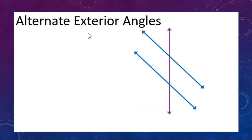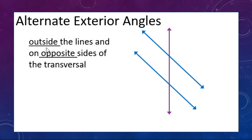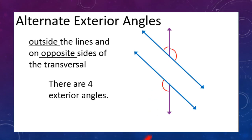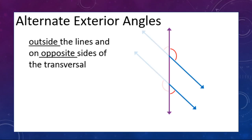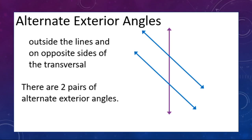Now let's look at alternate exterior angles. These are outside the lines — not between them — and on opposite sides of the transversal. We ignore the interior angles, leaving four exterior angles. The 'alternate' part means if one is on the left, the other is on the right. We have two pairs of alternate exterior angles pointing in opposite directions.